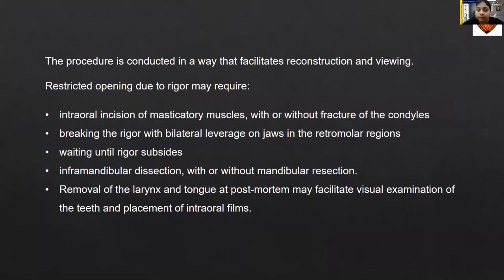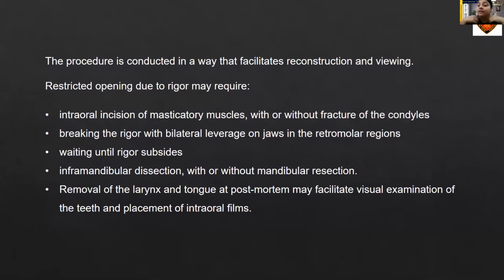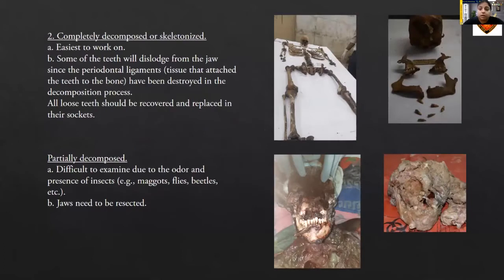Restricted opening due to rigor may require intraoral incision of masticatory muscles with or without fracture of the condyles, breaking the rigor with bilateral leverage on the jaws in the retromolar region, or simply waiting until the rigor subsides. If not an emergency, waiting is preferable. Infra-mandibular dissection can be done with or without mandibular resection — an incision from the upper anterior aspect of the neck extending towards the mastoid, raising a flap, even without mandibular resection. Removal of the larynx and tongue at post-mortem may facilitate visual examination of teeth and placement of intraoral films.